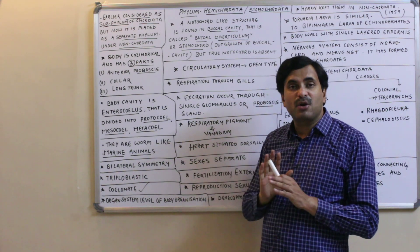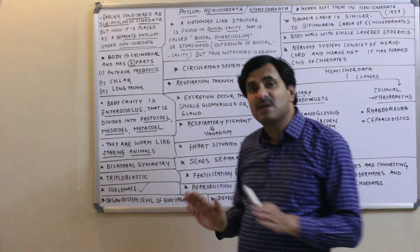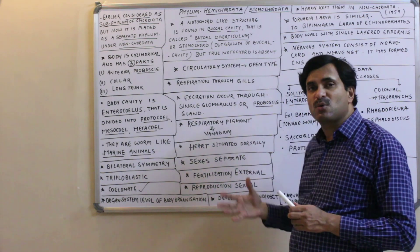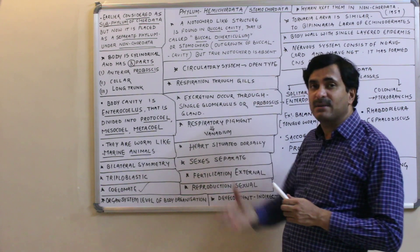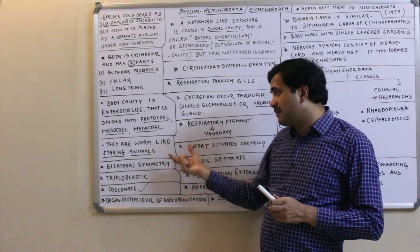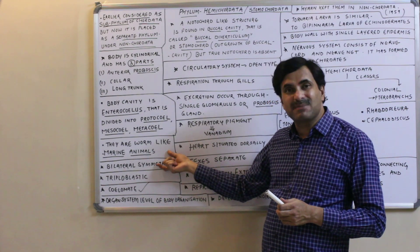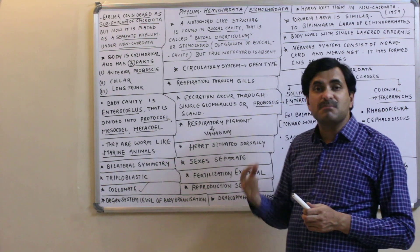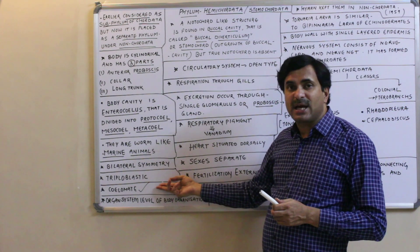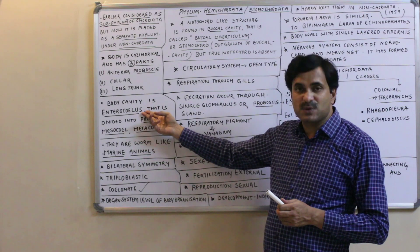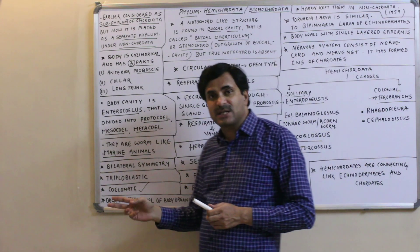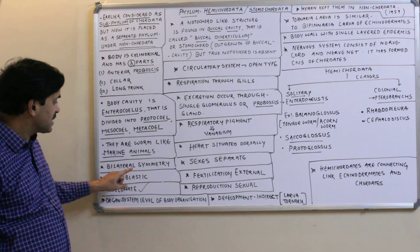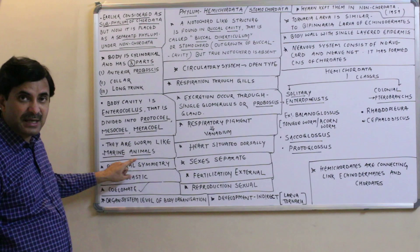Members of phylum Hemichordata are strictly marine — not found in freshwater, not terrestrial, and not parasitic. They have a worm-like body, as seen in Balanoglossus or Saccoglossus. They show bilateral symmetry, are triploblastic with three germ layers (ectoderm, mesoderm, and endoderm), are coelomate, and have organ system level of body organization.